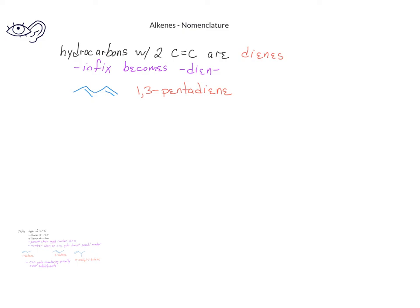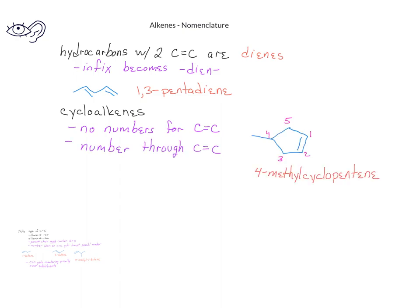When we have a cycloalkene, we do not include a number for the carbon-carbon double bond because, by default, the first carbon in the ring is one of the carbons that has the double bond. We then continue the numbering through the double bond so that the two carbons in the ring with the double bond are counted as carbons one and two.